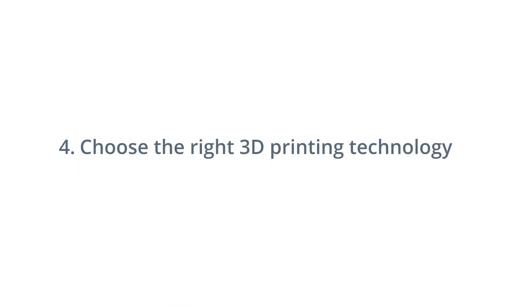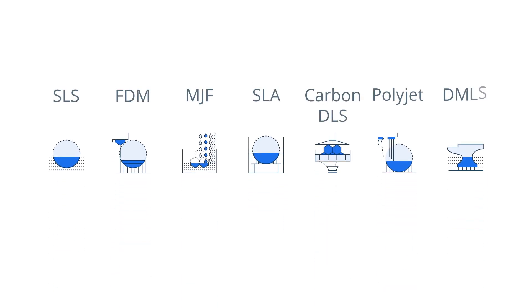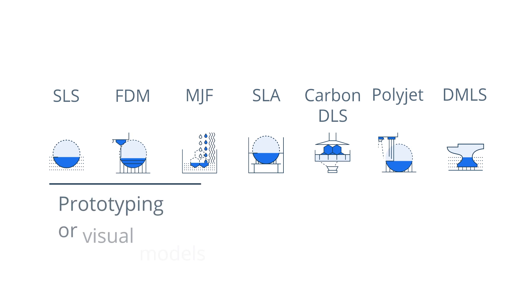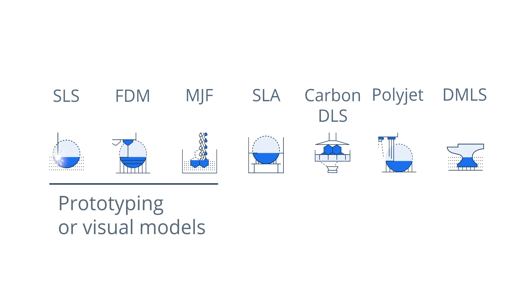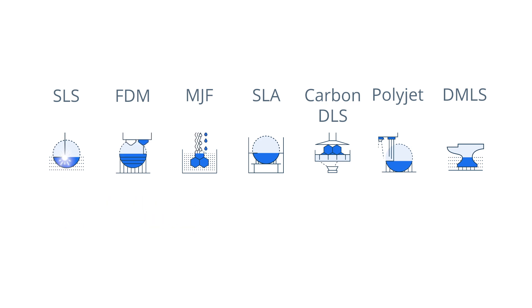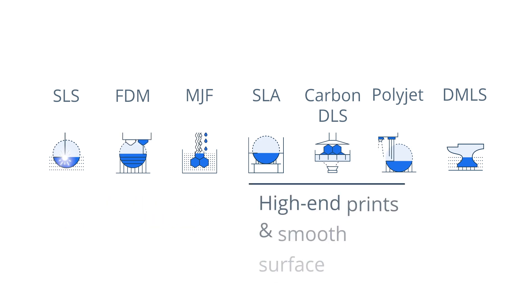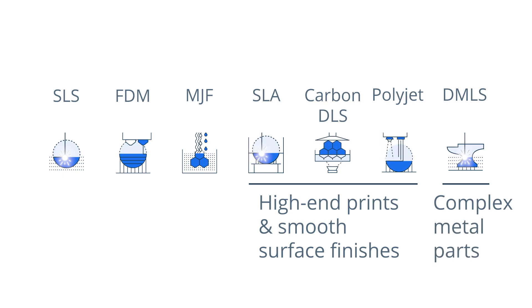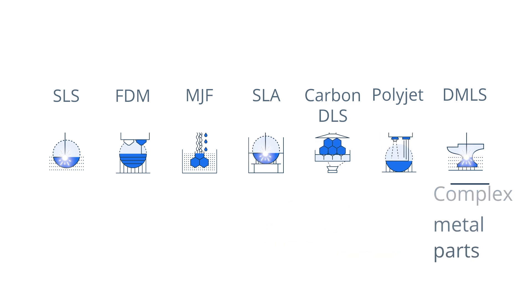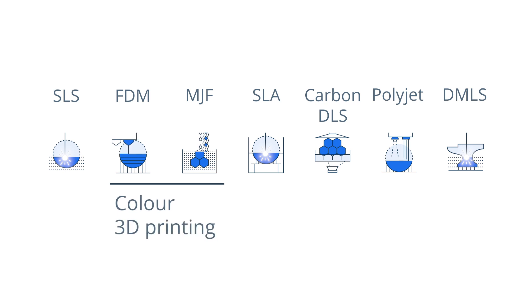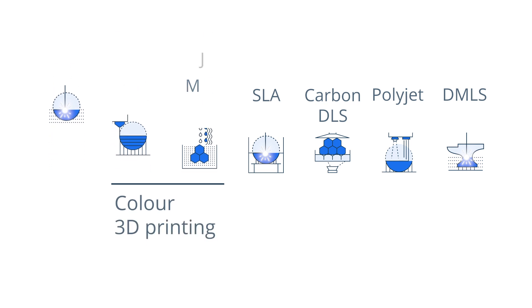4. Choose the right 3D printing technology. Select the most suitable technology based on your requirements. FDM, SLS and MJF are more affordable technologies compared to processes like SLA, Carbon DLS and PolyJet. For prototyping or visual models, go for SLS, MJF or FDM. For high-end prints with smooth surface finishes, go for SLA or Carbon DLS. For color 3D printing, go for FDM or MJF, or use post-processing.